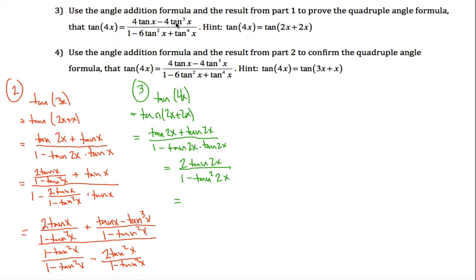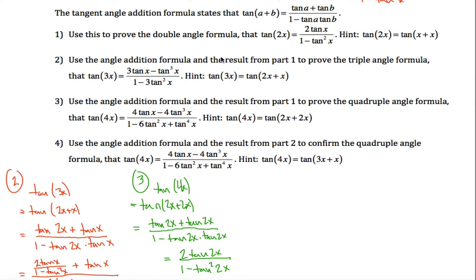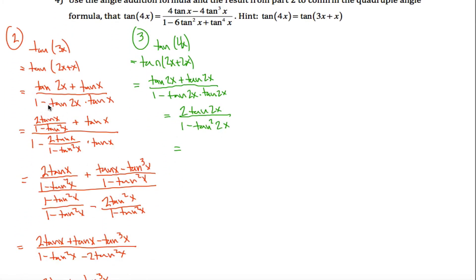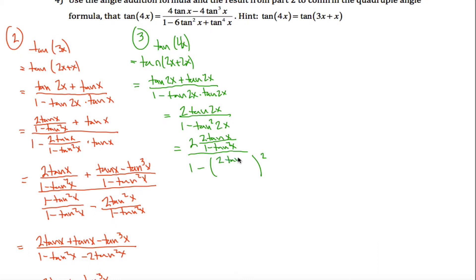That's not the final answer yet — I also want to use my result from Part 1 that tangent of 2x equals 2 tangent of x over 1 minus tangent squared x. So everywhere I see a tangent of 2x, I replace it with that. I get 2 times 2 tangent of x over 1 minus tangent squared x — which is 4 tangent of x, but I'll keep the form to show the steps. Then 1 minus tangent of 2x squared becomes 1 minus the quantity 2 tangent of x over 1 minus tangent squared x, squared.